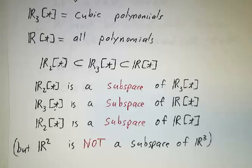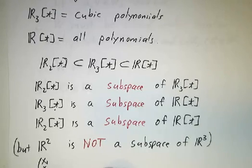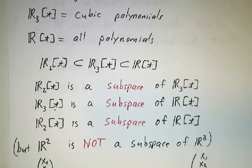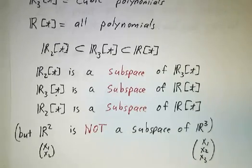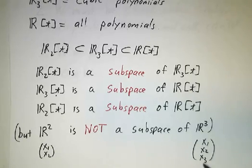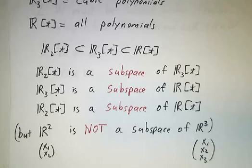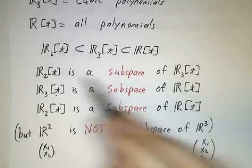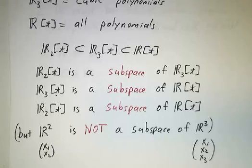However, watch out. R₂ — the space of all pairs of numbers — is that a subspace of R₃, all triples of numbers? No. Something with two numbers in it doesn't have three numbers in it. R₂ is not a subspace of R₃, even though R₂(t) is a subspace of R₃(t).